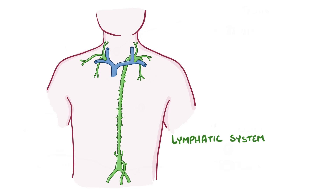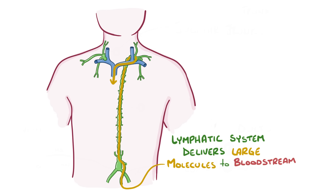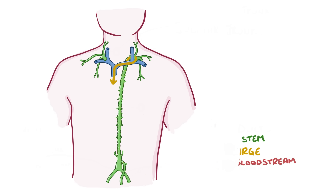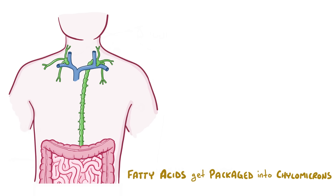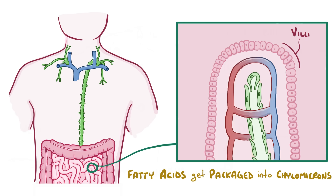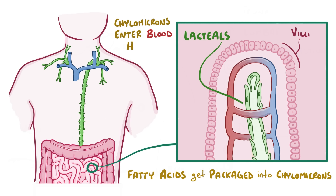The lymphatic system can pick up larger molecules, like hormones, that are too big to get into the capillaries, and then get them to the bloodstream. It can also help get nutrients to the tissues. For example, during a meal, fatty acids get packaged into balls of fat called chylomicrons by the small intestine. But just like hormones, these are too big to move across capillaries. Instead, the chylomicrons go into special lymphatic vessels called lacteals, which get their name from the fact that the lymph flowing through them looks like milk. The chylomicrons slowly make their way up into the thoracic duct and get dumped into the venous blood.